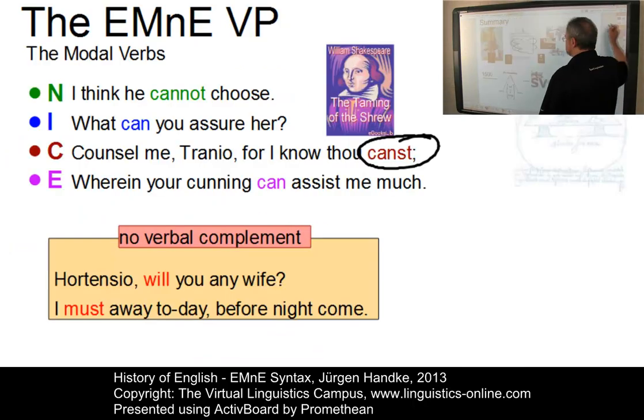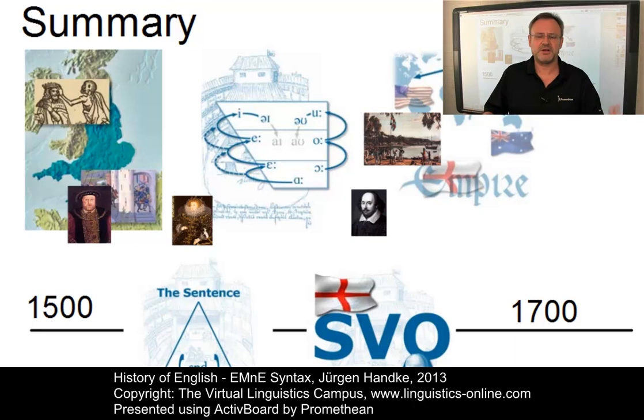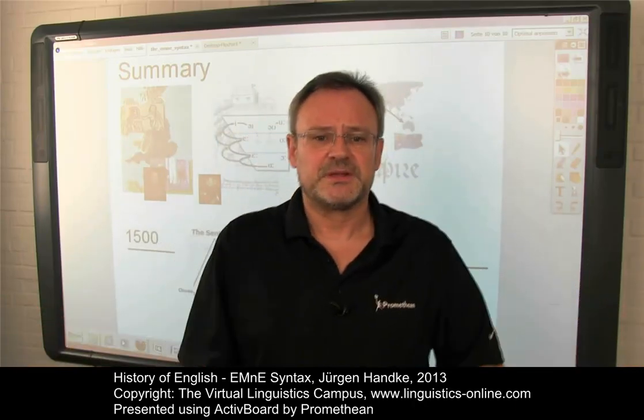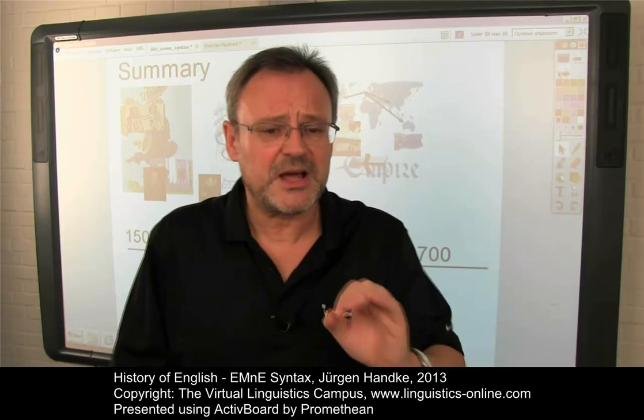Let's summarize. Early modern English syntax was now almost like that of present-day English. The word order was predominantly SVO, and with the exception of adjective-noun patterns, early modern English exhibited a head-modifier sequence. Yet there were differences. These differences concerned the structure of the verb phrase and the elements within it — primary and secondary auxiliaries — and the use of aspectual distinctions. So, despite the large number of similarities, there was still some way to go to reach the syntactic structure of present-day English. Thank you very much for attending my e-lectures on the historical development of English syntax.